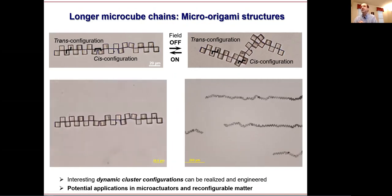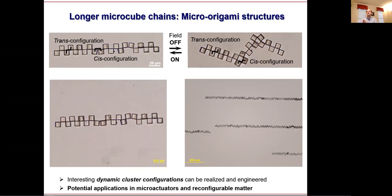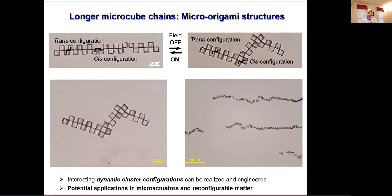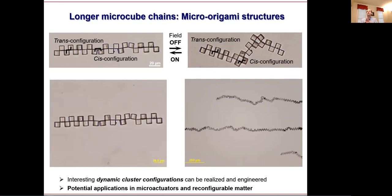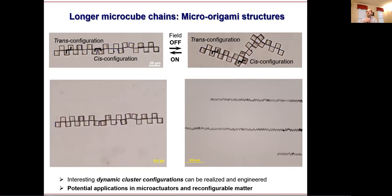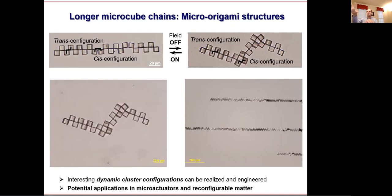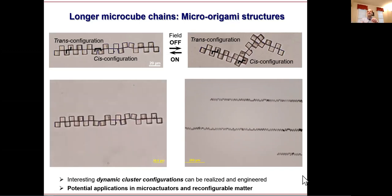Does the medium in which the particles are suspended have an influence? Not significantly for magnetic particles, but it has an important influence for electrically driven active structures — the presence of electrolyte changes electrostatic interactions. For magnetic particles, we make sure they do not stick to each other through other interactions: we use non-ionic surfactant to prevent van der Waals sticking, which would interfere with the reversible reorganization of the structure.